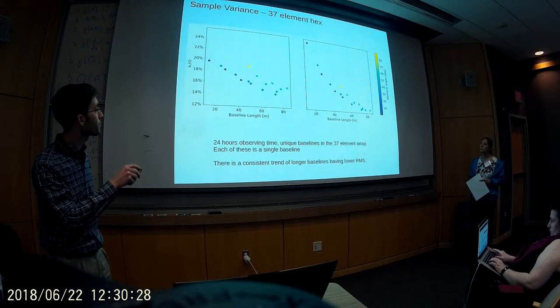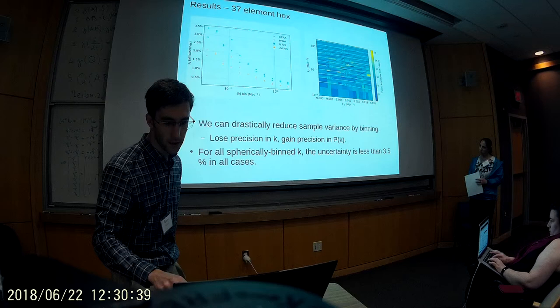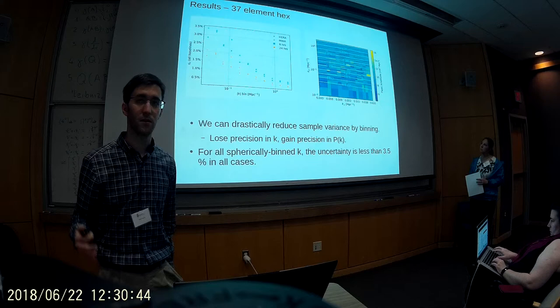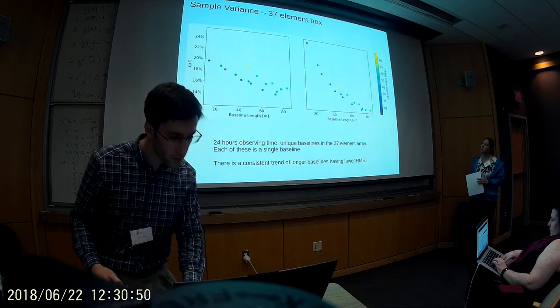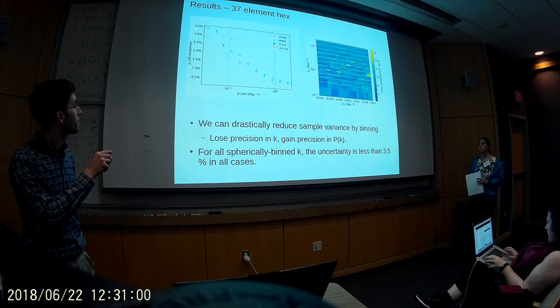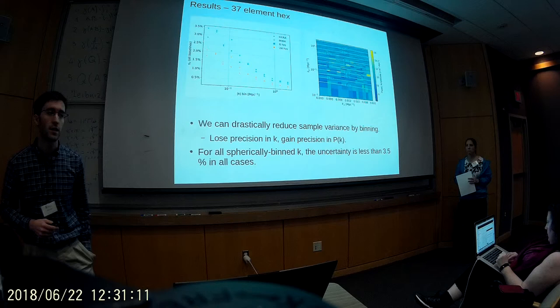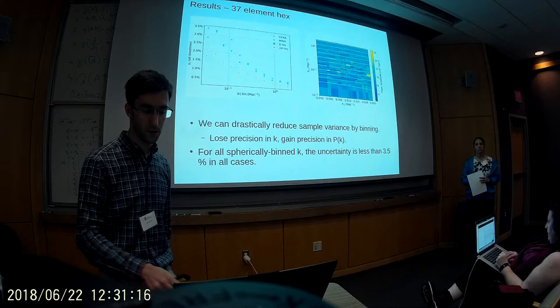I also simulated a 37-element hexagon array, and we see a general trend: with increasing baseline length it drops off the sample variance faster, but it's a little more compact for the narrower HERA beam because those correlation lengths are closer together. We can actually really improve on this estimate by binning in K. These curves aren't very promising — we're seeing sample variance upwards of 20 or 15 percent — but by choosing some K-bin scale, we can actually bring it down under 3.5 percent for all of our K modes. This is at 8 hours of LST or 24 hours of LST — a pessimistic and optimistic case — with logarithmic K-binning for the 37-element hex array.